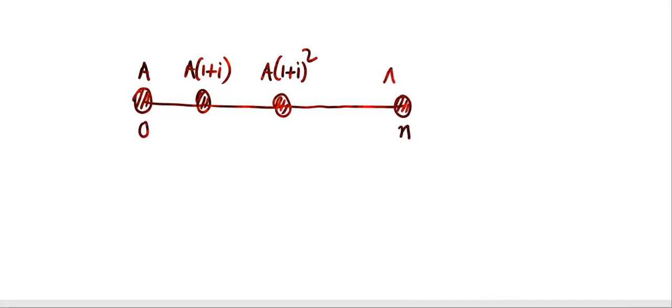If you deposit an amount A, after one year you will get A times (1 plus i). And after two years, it will grow to A times (1 plus i) squared. You can continue. And then after N years, you will have A times (1 plus i) to the power N in your account.